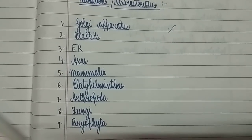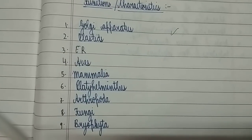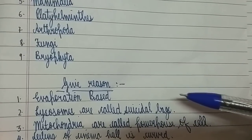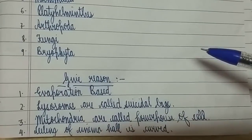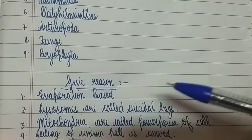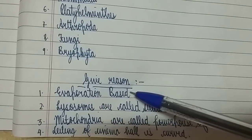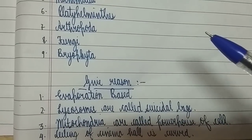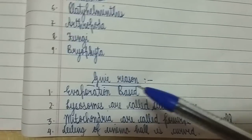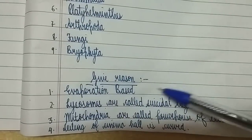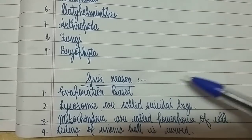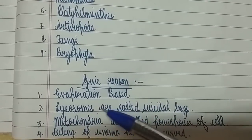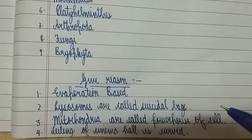Our next section is 'Give Reasons,' which are very important for Class 9 and 10 exams. Evaporation-based reasons come from Matter in Our Surroundings — the matka example, the acetone example, and the desert cooler example are picked up and you have to explain why. You need to know all the characteristics and apply them practically while solving give-reason questions.